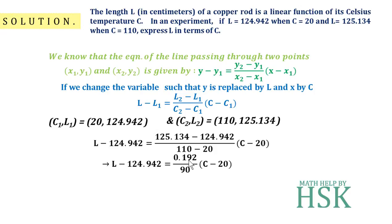Therefore, we get L equals 0.192 over 90 times (C minus 20) plus 124.942. This can be further simplified a little bit, or this is the required linear relation.